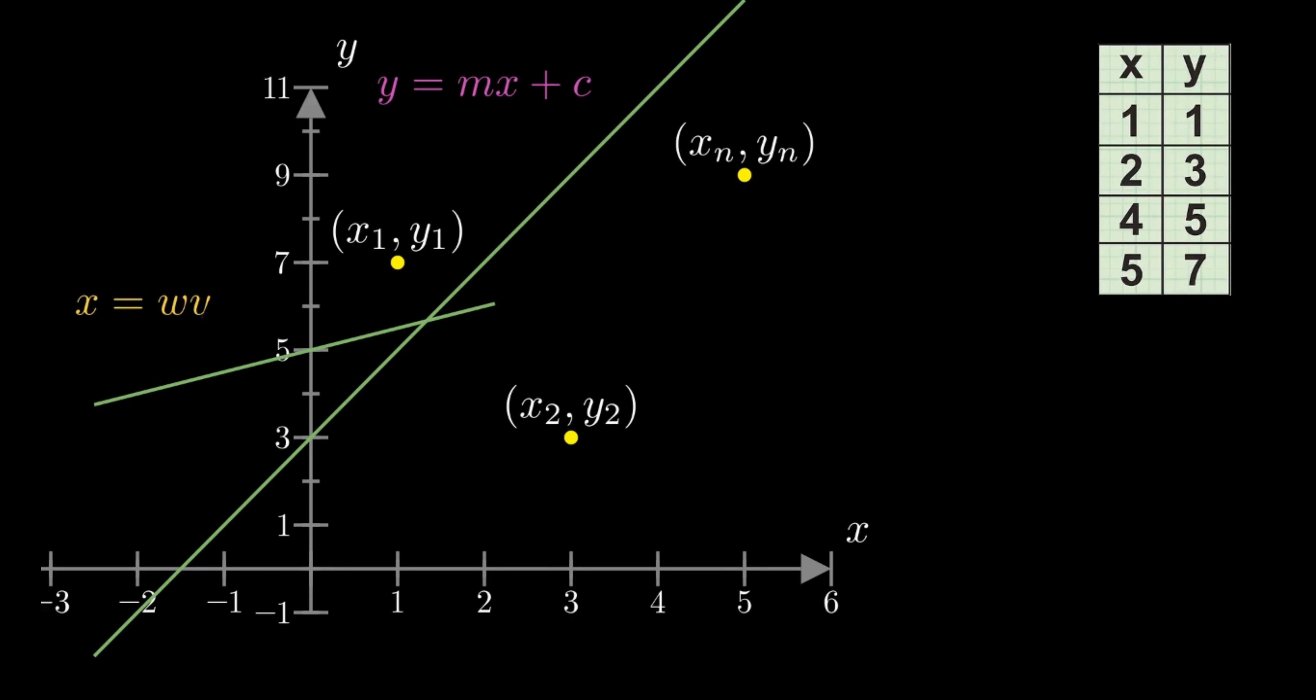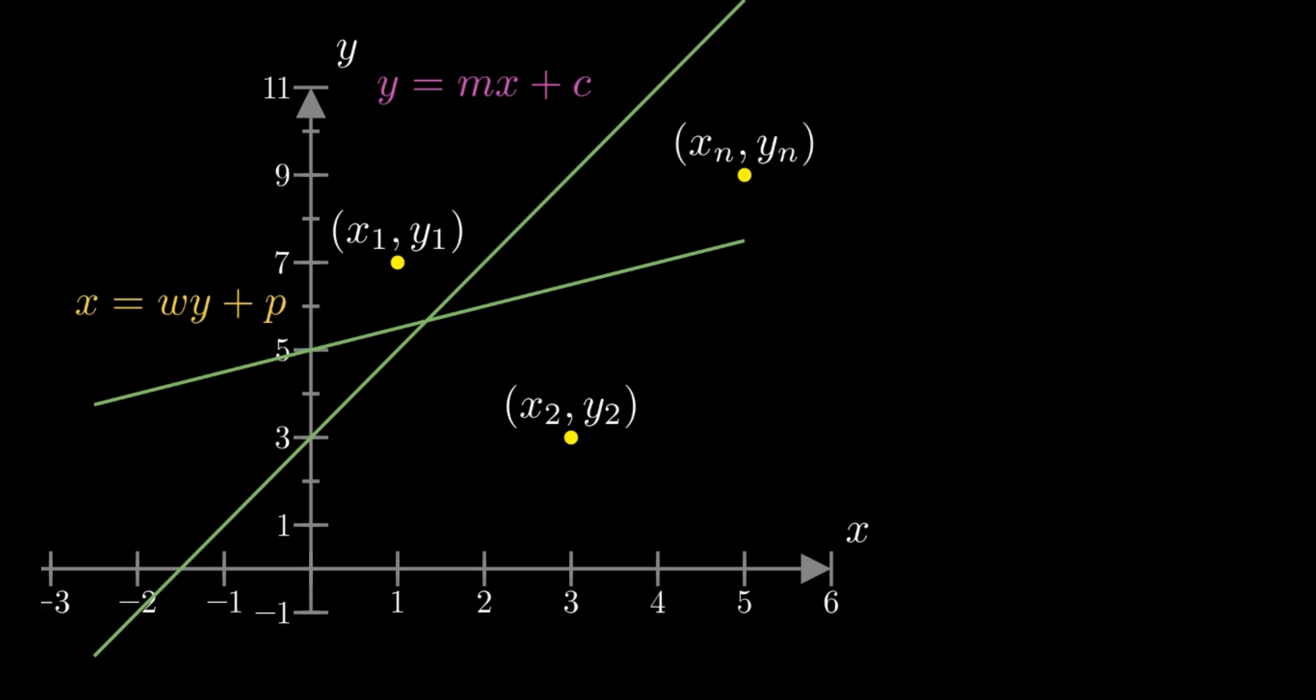Similarly, if y is considered to be correct as per our model, a function x equals wy plus p can be created so that x is the predicted corresponding data.